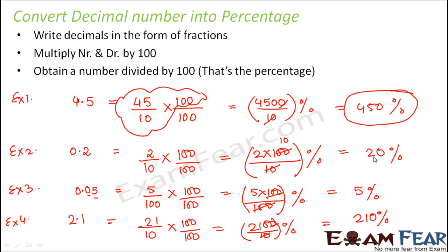Now the interesting observation is for decimals which are less than 1, the percentages are less than 100. You see here 20%, you see here 5%. Whereas for decimals which are greater than 1, the percentages are more than 100%.